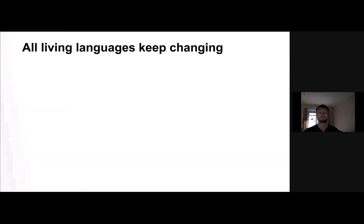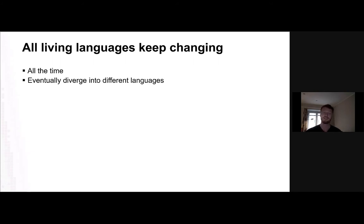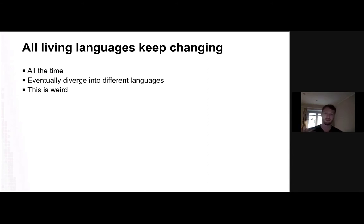So the big picture. All living languages keep changing, all the time, and they might change enough — and they often do — that they diverge into different languages. And when you think about it, it's kind of weird. Wouldn't it be nice if everybody just spoke the same language, neighbors could speak to each other, everybody understood each other, and the world might be a different place. But this is not how human language works, and I'm interested in why.